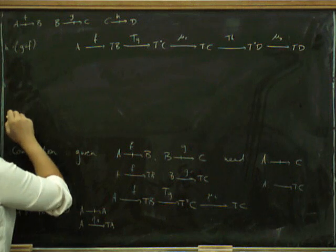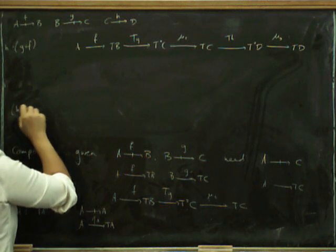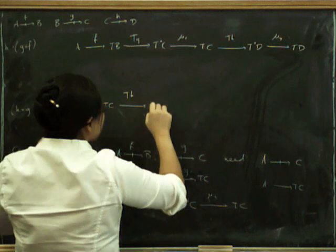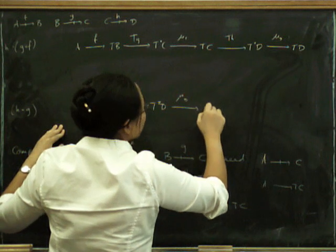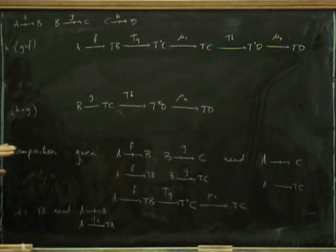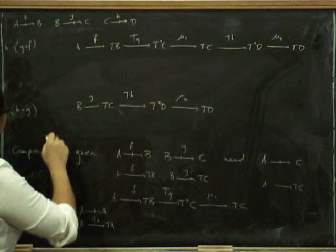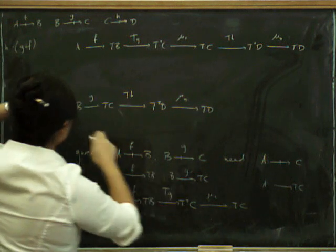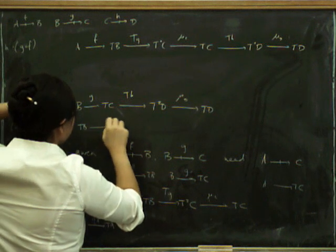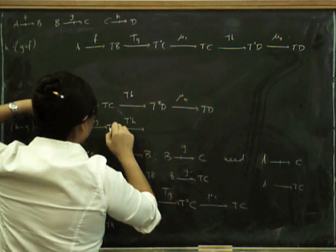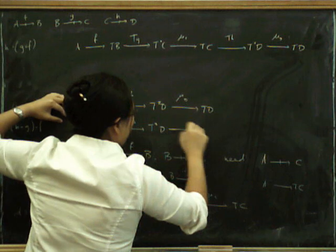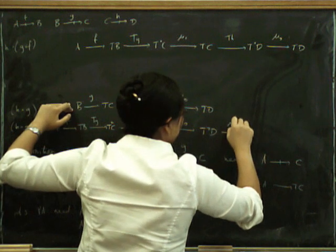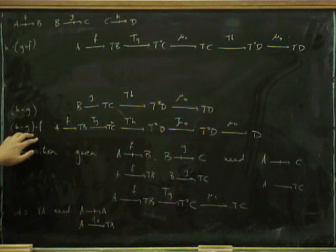Now, the other thing we have to do is we've got to do H composed with G composed with F. So let's just do H composed with G first. H composed with G, we start with G, and then we do T of H, which takes us to T squared of D, and then we use μ to get us down to the right place again. Okay. Now, I didn't really write that far enough along. Whoops. We've got to compose it with F. And to compose it with F, first we've got to hit this entire thing with T. Okay, so let's hit the entire thing with T. T squared H, T cubed D, T μ D, and T squared D, and then we stick F at the beginning and μ at the end.